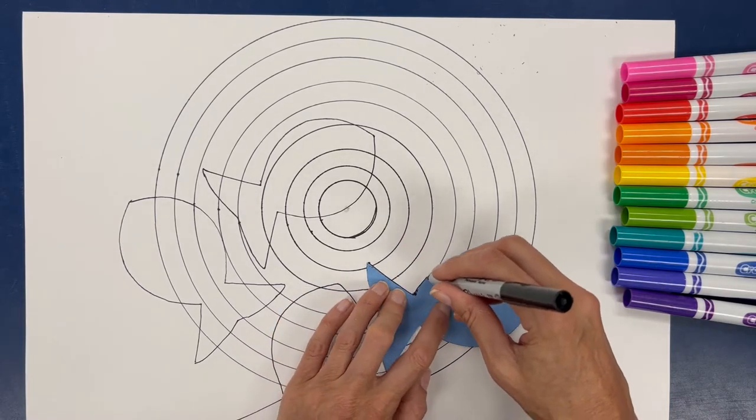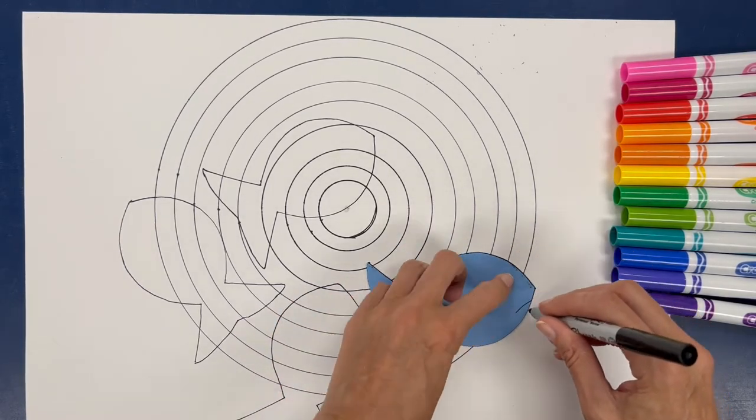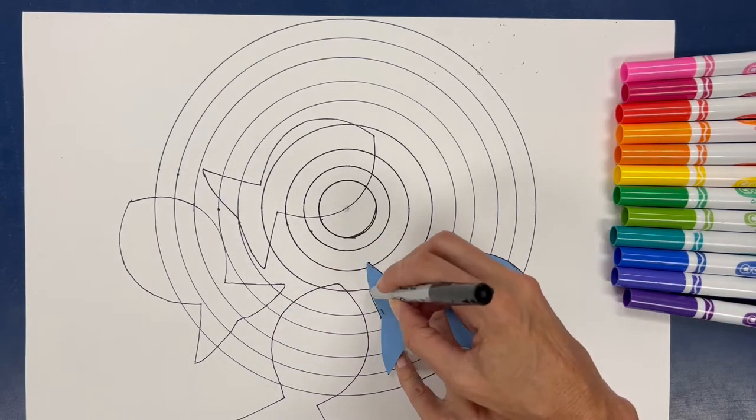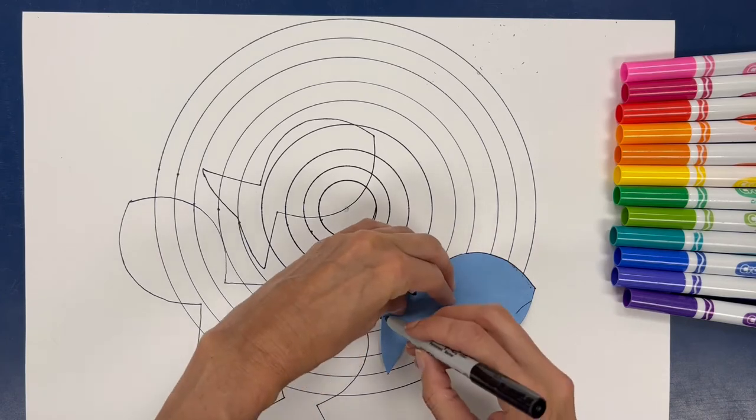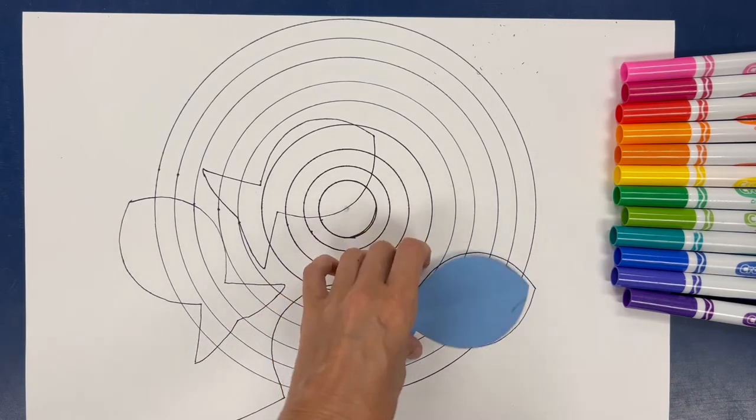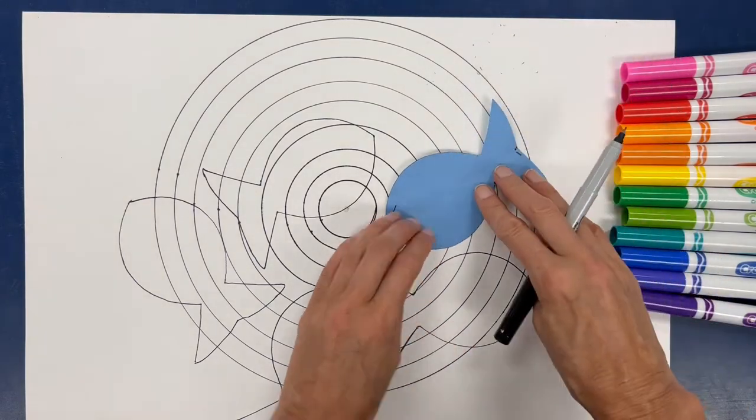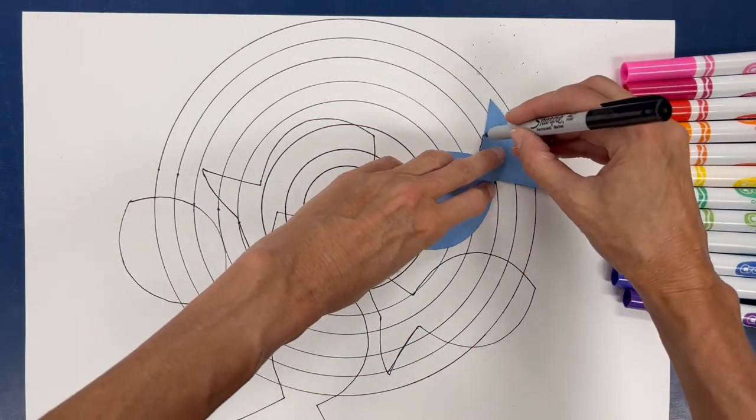And see, there's no real rhyme or reason for the direction I'm putting these guys. They're all in different directions. They're not lined up in any specific way. It sort of looks somewhat random. We want it to look a little bit random and free and fun.